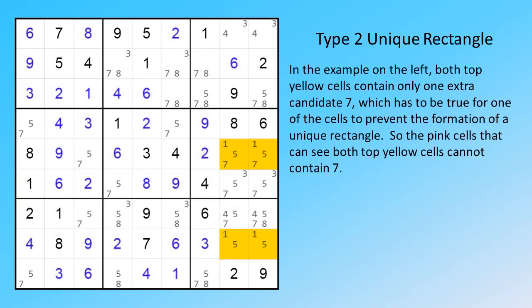In the example on the left, both top yellow cells contain only one extra candidate 7, which has to be true for one of the cells to prevent the formation of a unique rectangle. So the pink cells that can see both top yellow cells cannot contain 7.